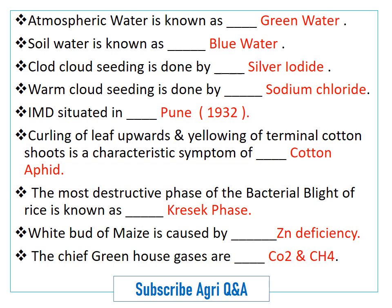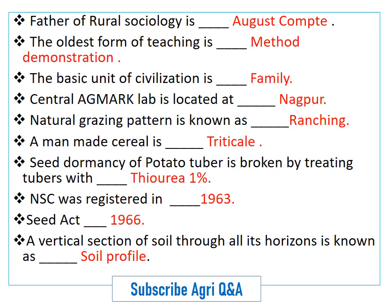The chief greenhouse gases are carbon dioxide and methane. The father of rural sociology is Auguste Comte. The oldest form of teaching method is method demonstration. The basic unit of civilization is the family.